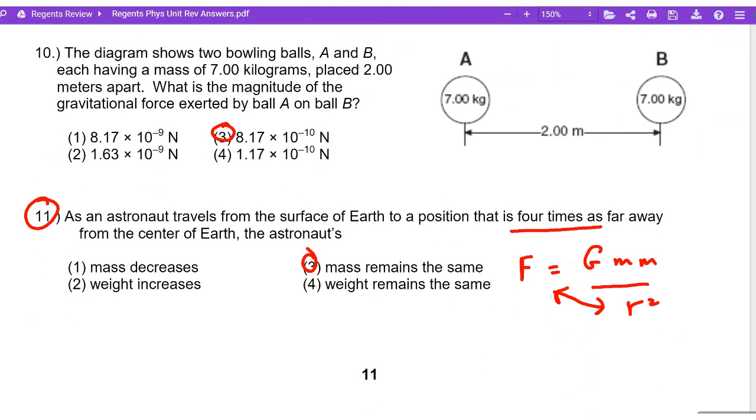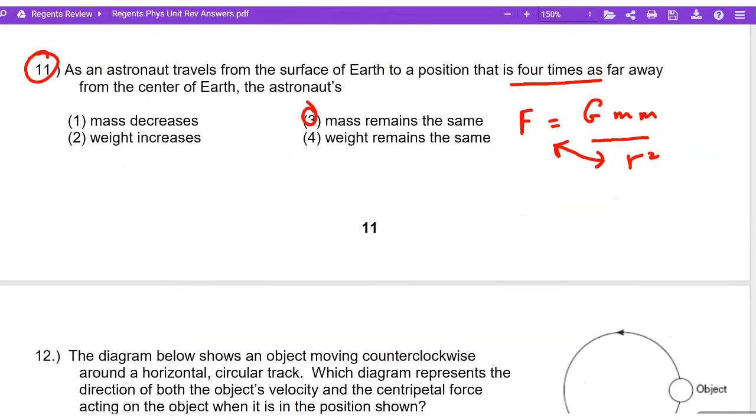All right, let's see what else we've got. Here's another example. It's a trick question. An astronaut's on the surface of the Earth. When it's four times the distance away from the Earth, what happens to the mass? Mass doesn't change. Just like in that question before, mass weight changes.